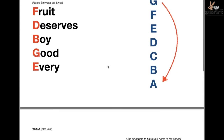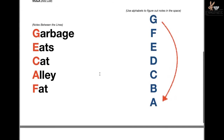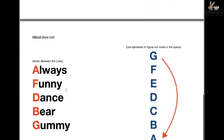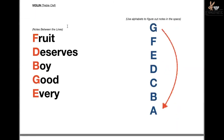That note reading chart is just for the violin, but the download available on my website also comes with a viola version. For viola, an example acronym for the lines would be 'fat alley cat eats garbage' — or create your own, like 'gummy bear dance funny always,' which was created by one of my students. I use that instead of 'good boy does fine always' to avoid confusion with the treble clef mnemonic.